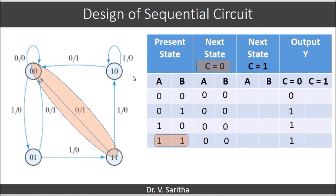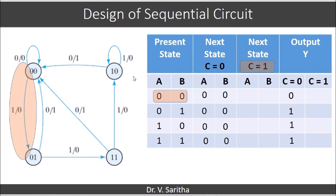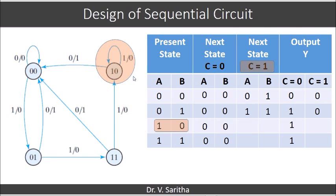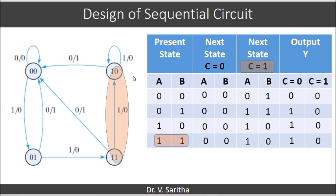From state 0,0 on input C equal to 1, it goes to state 0,1 and the output is 0. From state 0,1 on input C equal to 1, it goes to state 1,1 and the output is 0. From state 1,0 on input C equal to 1, it goes to state 1,0 and the output is 0. From state 1,1 on input C equal to 1, it goes to state 1,0 and the output is 0. The state table is given in this fashion.